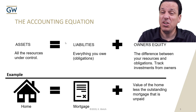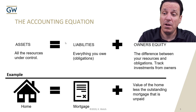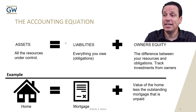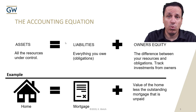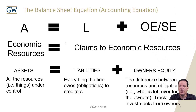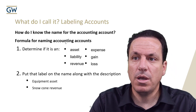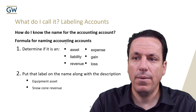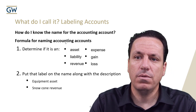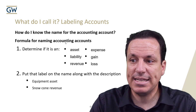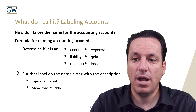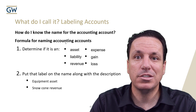You can think about it like your home. You have your home and everything in it that you own and have control over. The mortgage is the debt owed on the house. Your owner's equity is your home's value net of the mortgage. This equation is set up so that economic resources equal the claims to those economic resources. The question frequently comes up: what do I call it? How do I label the account and determine if it's an asset, liability, expense, gain, or loss?